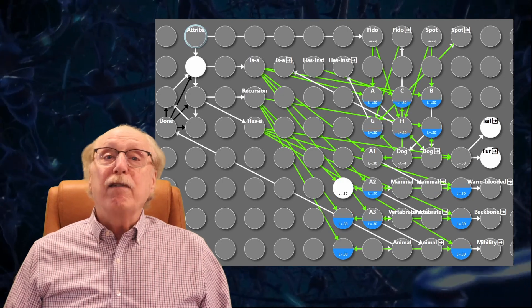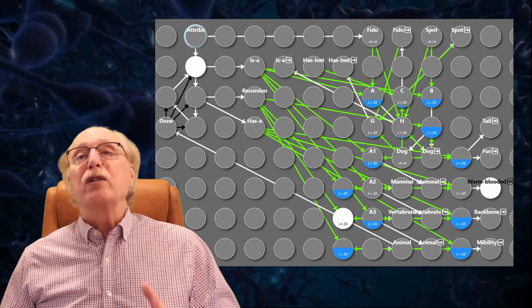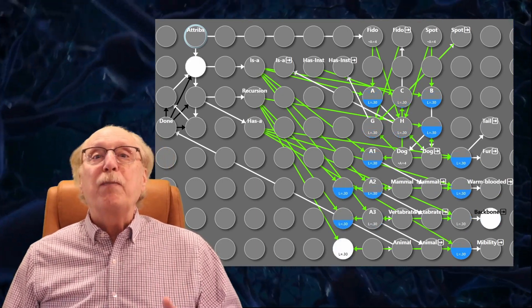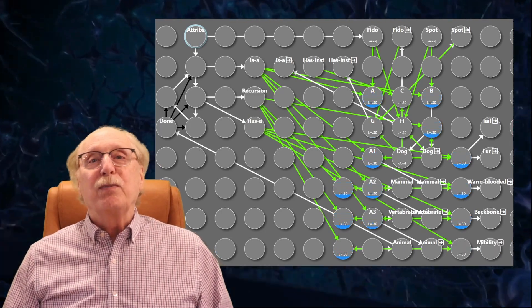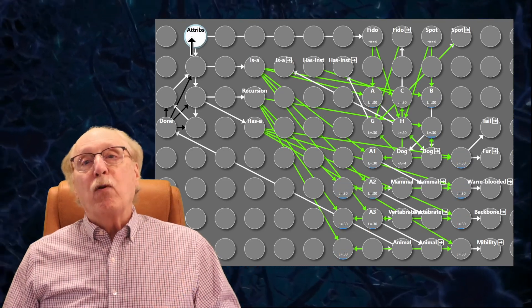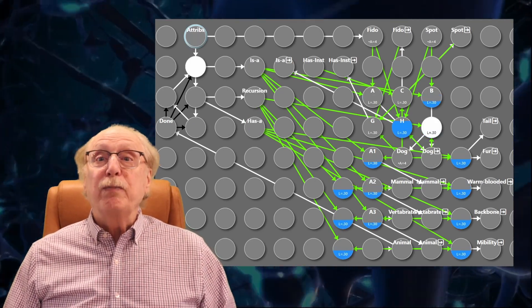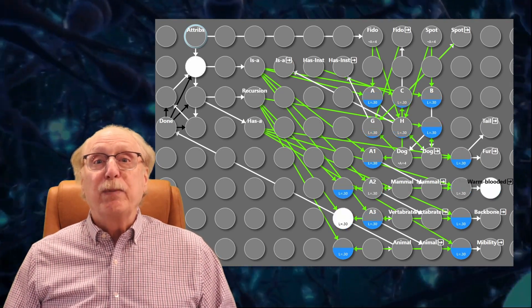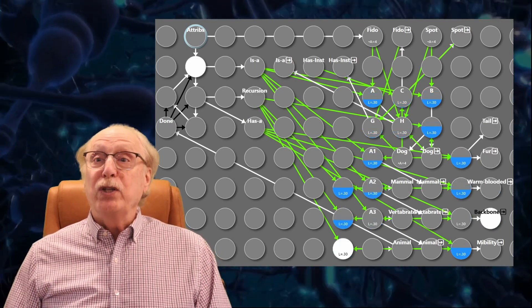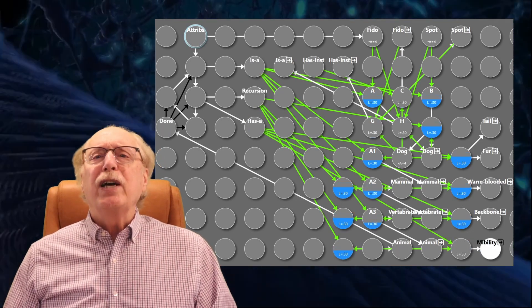If we have a chain of ISA relationships, you can see that the query progresses up the chain, identifying attributes as it goes. For completeness, the recursion relationship type has an inverse, which I call the this relationship, which transfers the input to the output. You'll see how this is also important down the road.